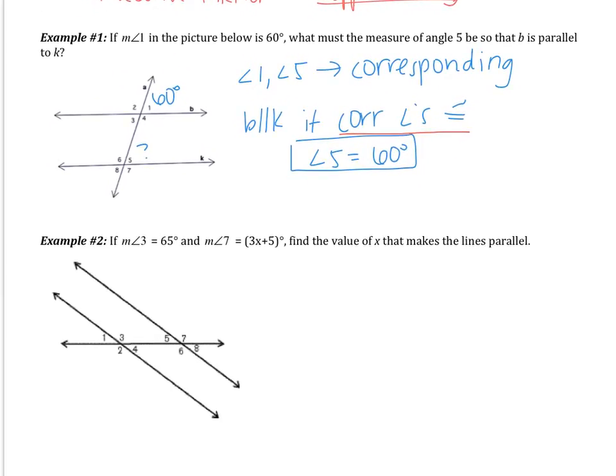Example 2: the measure of angle 3 is 65 degrees and the measure of angle 7 is 3x plus 5. Find the value of x that makes the lines parallel. I would like you to try this one. Pause the video, try this on your own, and come back when you are finished.